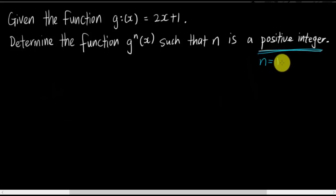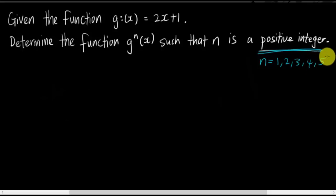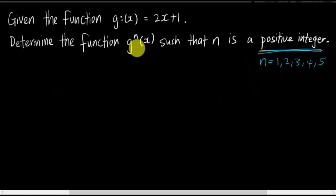It cannot be a fraction, it cannot be a decimal — it must be something like 1, 2, 3, 4. That's what we call a positive integer. A lot of students, after they finish reading the second sentence, have no idea what the question is trying to find. Basically, the question asks you to write g(x) in terms of n.